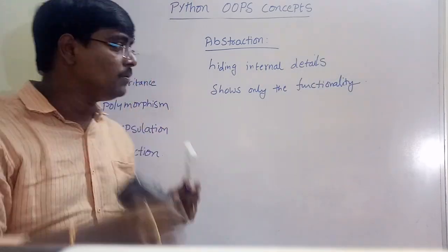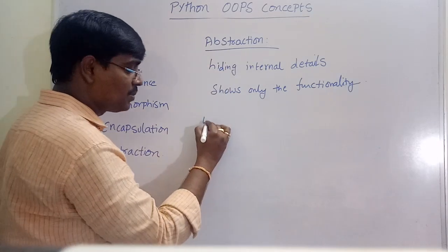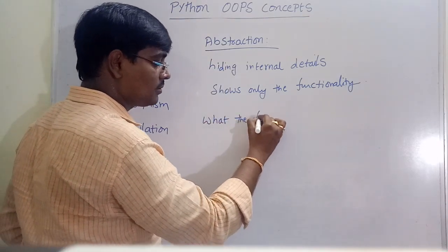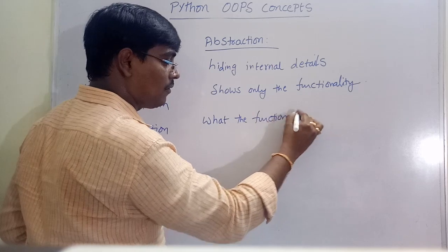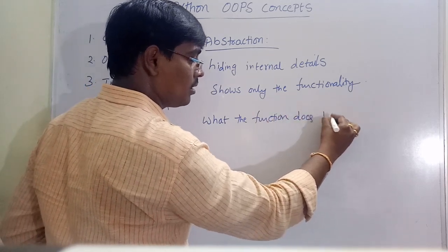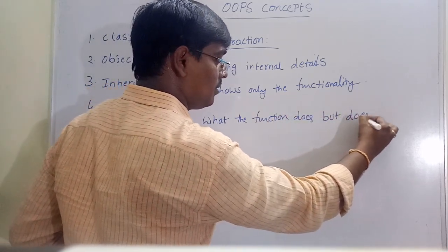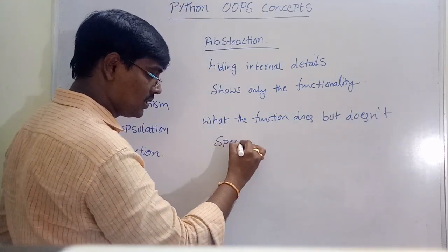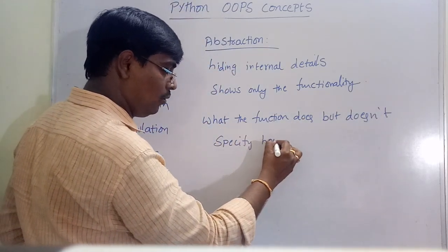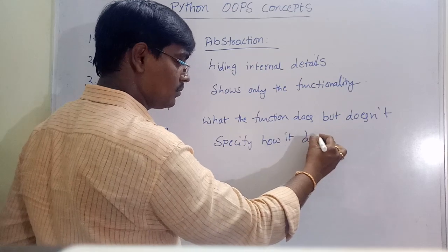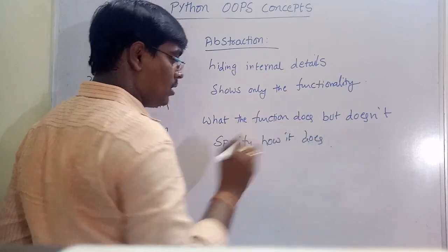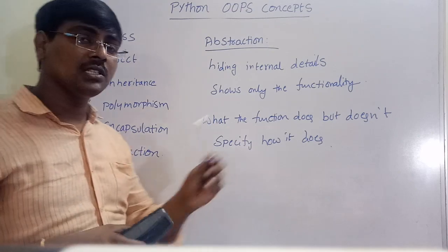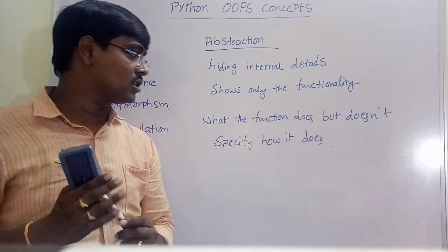In simple terms, abstraction specifies what the function does but does not specify how it does it. The implementation details are not shown to the user — it only specifies what this function is used for.